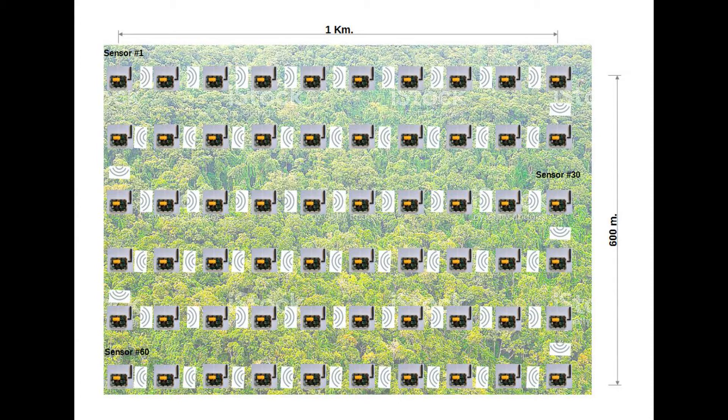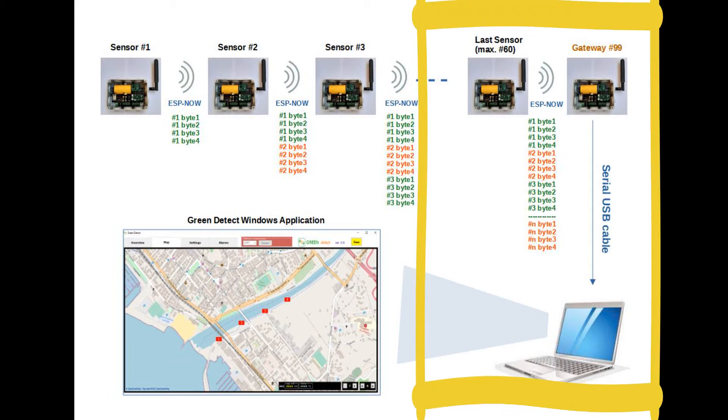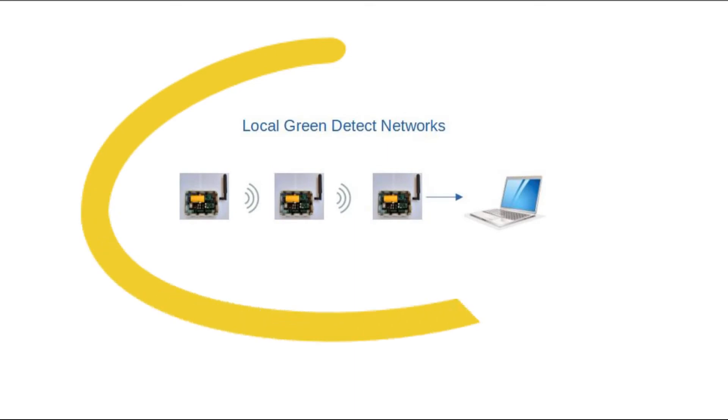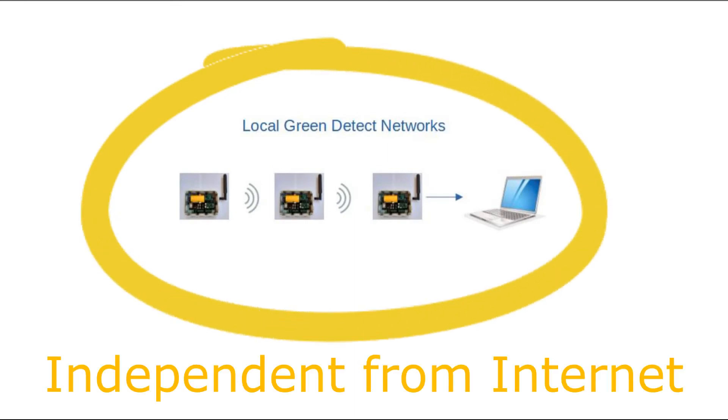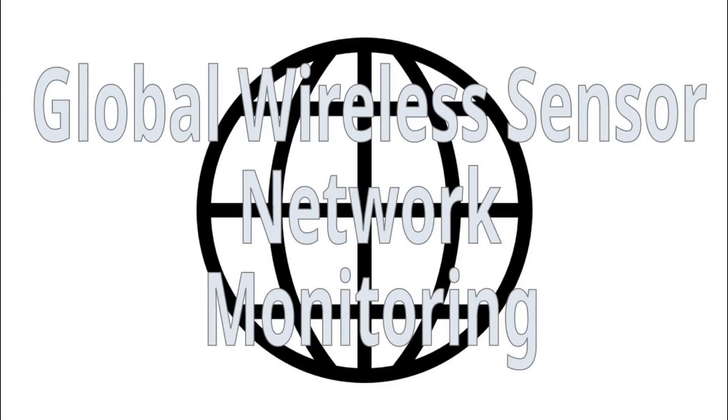The last module of the network communicates with the gateway module connected via USB serial to the supervisor computer. The network is completely independent from the internet, so it can work even in remote and connectionless areas. However, if the supervision PC is connected to the internet, the collected data can be shared in IoT applications together with data of other Green Detect local networks in order to create global monitoring.